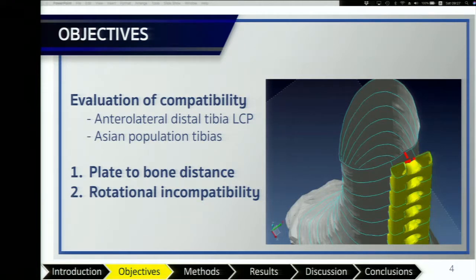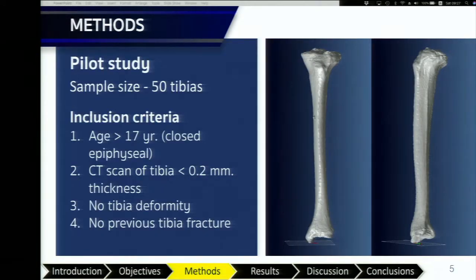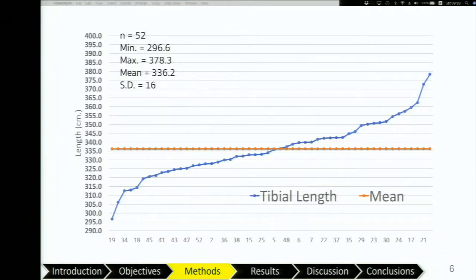We looked at the plate-to-bone distance and rotational incompatibility. We began with a pilot study to determine the necessary sample size, and determined that the sample size should be 50 tibias. We made 3D models of 52 normal tibias using CT scans.